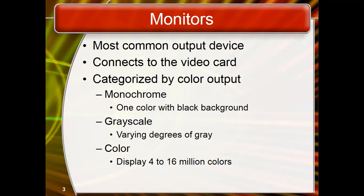There are two types of monitors: monochrome monitors and color monitors. Monochrome monitors display two colors — one for the foreground, such as text, and one for the background. Colors can be black and white, or sometimes green and black. Color monitors are capable of displaying many colors — anywhere from 16 to over 1 million different colors.